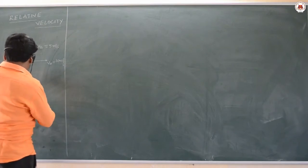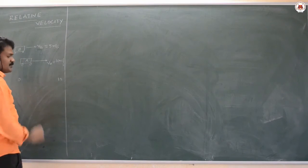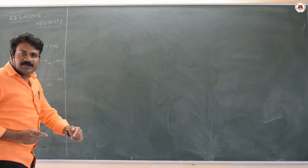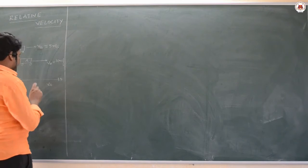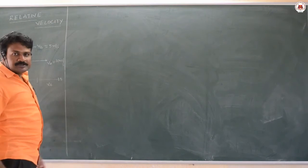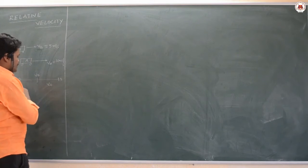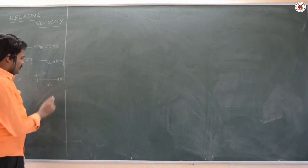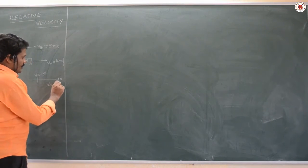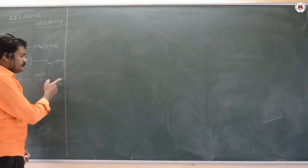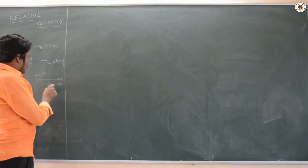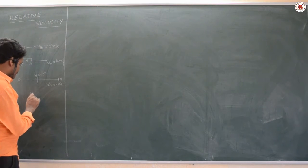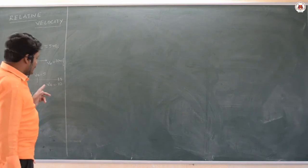Think of it like a scale: from 0, velocity of B is 5 and velocity of A is 10. If I start counting from B instead of from 0, then velocity of A becomes 5 — just the extra amount beyond B. So velocity of A with respect to B, V_ab, is 5 meters per second, because counting starts from velocity of B.